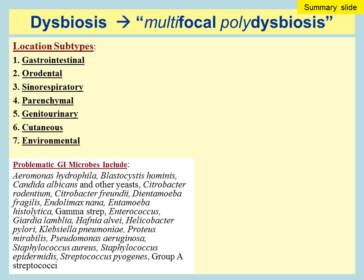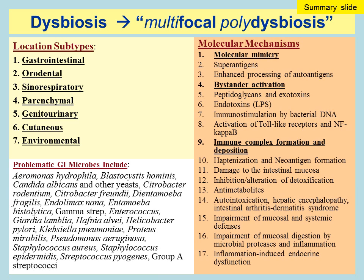Parenchymal infections are also seen — for example, subclinical hepatitis C, where liver enzymes are normal so we don't suspect hepatitis, but appropriate testing reveals it. Chlamydophila pneumoniae, which lives intracellularly, has been associated with fatigue-related syndromes and autoimmune conditions, with new testing parameters available as of 2011. Genitourinary dysbiosis is very common, often seen in women with rheumatoid arthritis. Cutaneous dysbiosis is common in patients with psoriasis and eczema. Environmental dysbiosis describes a phenomenon where patients are exposed to microbial byproducts such as volatile organic compounds that cause immune imbalance leading to autoimmune conditions.